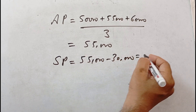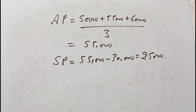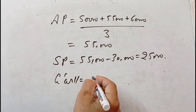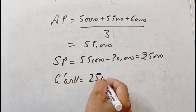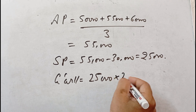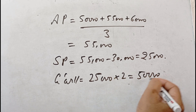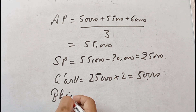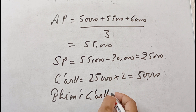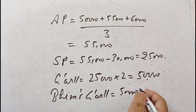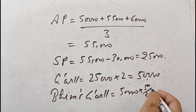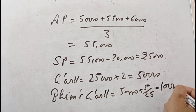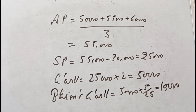The average profit is 55,000. We minus the normal profit, which is 30,000. So the super profit is 25,000. For goodwill, super profit of 25,000 multiplied by 2 years purchase gives goodwill of Rs. 50,000. On Bhim's retirement, his share of goodwill is 50,000 into 5 by 25, which equals Rs. 10,000. So Bhim's goodwill share is Rs. 10,000.